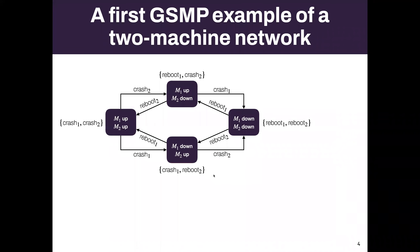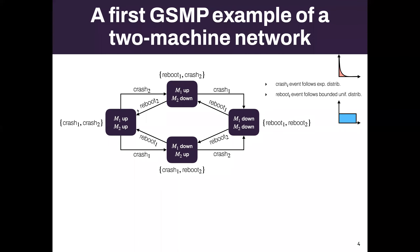I want to give an example. This is a GSMP — a generalized semi-Markov process. You have a finite state system where some machines can be up or down: M1 and M2 can be up or down. There can be events happening like a crash — the machine may crash and needs to be rebooted afterwards. These events happen with some probability distribution on delays. In this example, the crash event follows an exponential distribution.